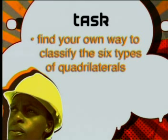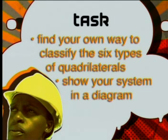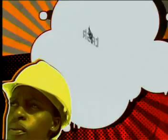As your task for today, find your own way to classify the six types of quadrilaterals and show your system in a diagram. Use your diagram to describe your system to the class and explain your reasoning. You should all discuss each other's classification systems and see if they make sense. You don't need to reach agreement on any one way to classify quadrilaterals, but you need to be able to explain your reasoning for the way you have linked the groups together.